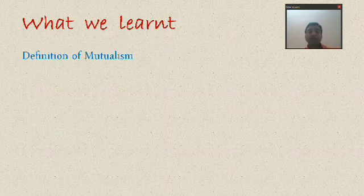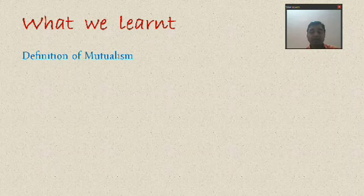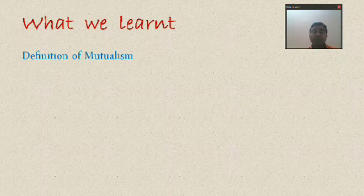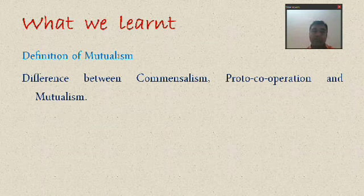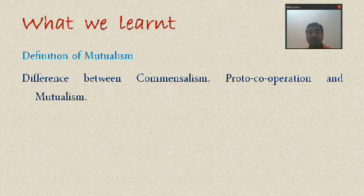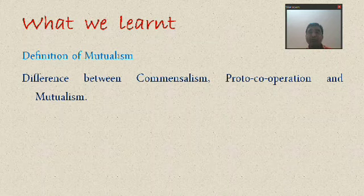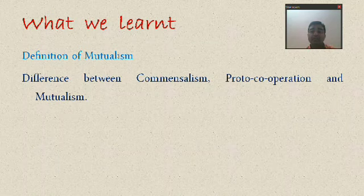In summary: mutualism is a positive type of association that is obligatory, in which both species get benefit and the union is essential for survival. The difference between the three types: commensalism is a positive biotic interaction where one species benefits and the other neither benefits nor is harmed. Proto-cooperation is where both individuals benefit but the union is not mandatory or essential for survival. Mutualism is where both animals benefit and their union is essential for survival — as in lichen, wasp and fig, and termite and Trichonympha.